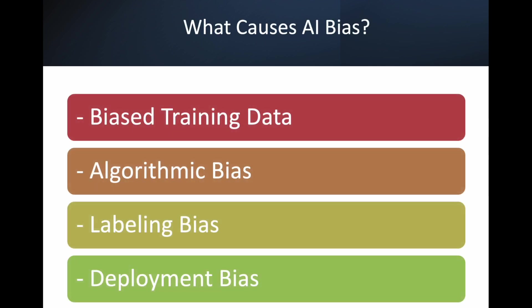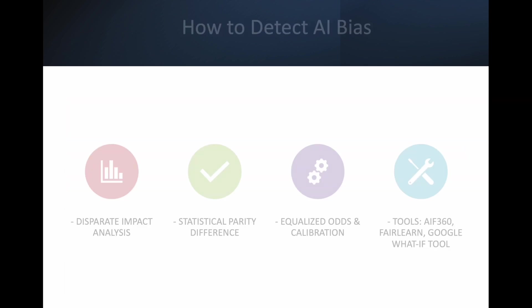What causes AI bias? The first cause is biased training data. Whenever biased data is used for training, it always gives biased decisions — if data has more male than female, it is biased towards male; if data has more right-handed people than left-handed people, it will be biased towards right-handed people. Second is algorithmic bias — sometimes the algorithm used is incorrect and may introduce biasness. Third is labeling bias — the labels used may be biased towards certain categories. And fourth is deployment bias — when deployed based on region or other factors, it may become biased around those.